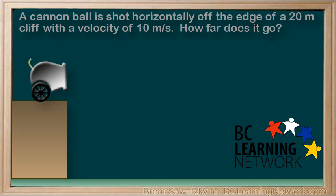A projectile example. A cannonball is shot horizontally off the edge of a 20 meter cliff with a velocity of 10 meters per second. How far does it go?